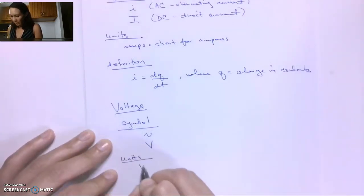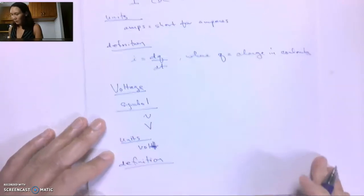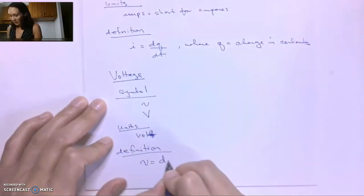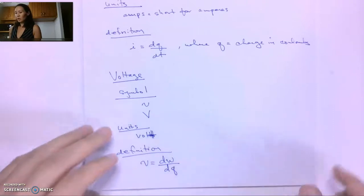The units of voltage are just the volt. And the definition, the mathematical definition, voltage is defined as dw/dq. Okay, so this is a change in energy per unit charge. So we know that positive and negative charges attract, the energy that's required to pull those charges apart, right, to separate those charges. That is the voltage. So the energy per unit charge created by that separation, that is the definition of voltage.